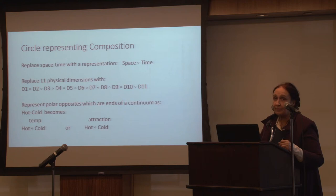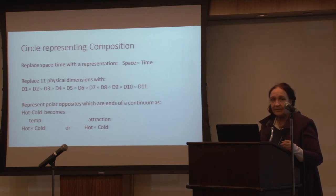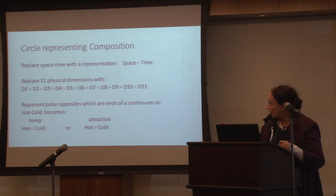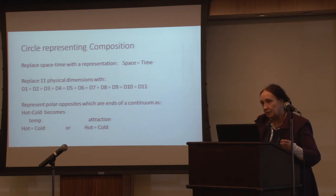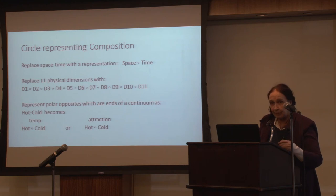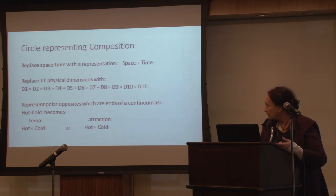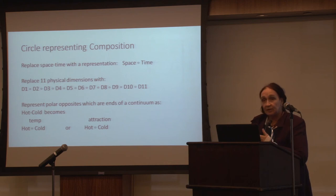We also have term pairs used in multiple contexts that represent some kind of a continuum, and using the composition symbol is a better representation of that. So 'hot' and 'cold' — in some contexts you're talking about temperature, so you put 'temp' to represent the measure: what are we measuring with a continuum that hot and cold compose. It could also be attraction that hot and cold compose.